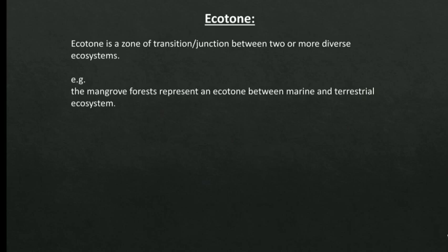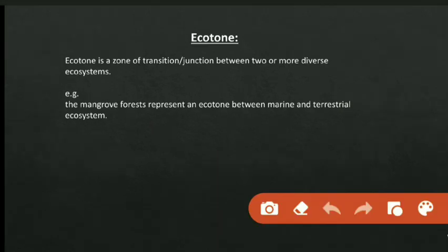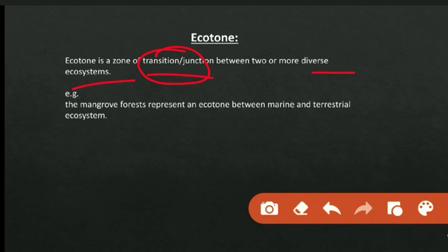Next is ecotone. An ecotone is a meeting zone or transition zone between two or more diverse ecosystems — a junction or meeting point between different ecosystems. For example, the mangrove forest represents an ecotone between marine and terrestrial ecosystems, i.e., between the ocean and the coastal ecosystem.